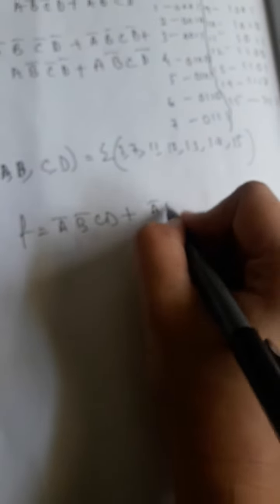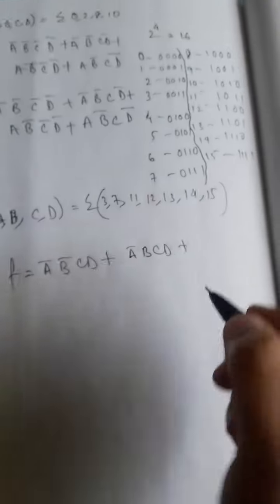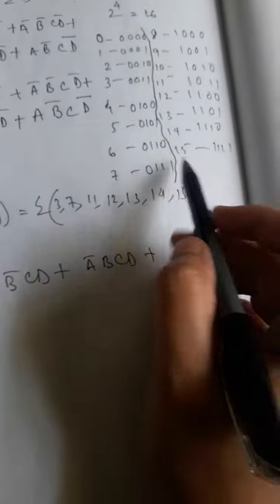7 is 0111, that is A bar B C D plus. 11 is 1011, A B bar C D plus.